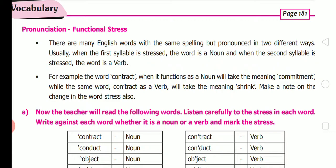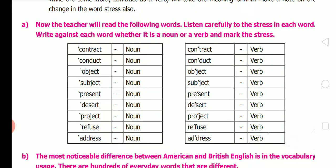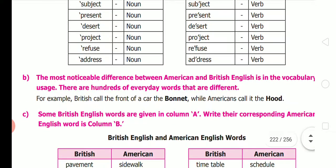For example, the word 'contract' — when it functions as a noun, it takes the meaning 'commitment,' while the same word 'contract' as a verb takes the meaning 'shrink.' Make a note of the change in word stress. Words like contract, conduct, object, subject, present, desert, project, refuse, and address follow this pattern: first syllable stress for noun, second syllable stress for verb.